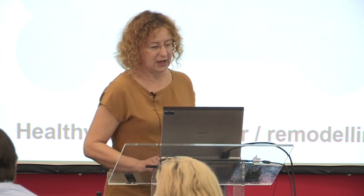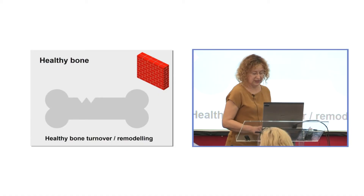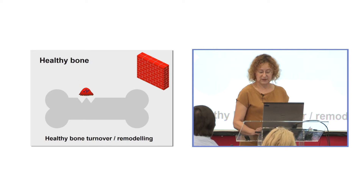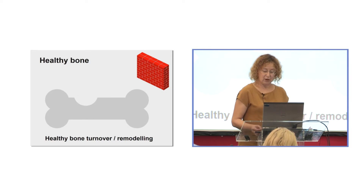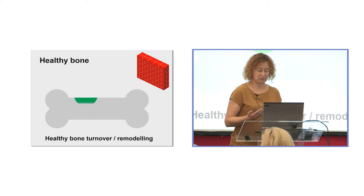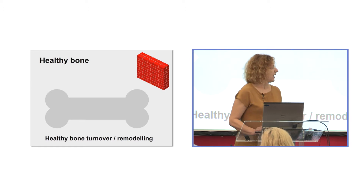Bone, like any other material, undergoes damage and wear and tear, and it has to be repaired. The osteoclasts arrive on the scene and dissolve bone through the action of very powerful compounds — chemicals such as hydrochloric acid and others. Then in their place, osteoblasts come along and in an orderly fashion lay bone. We call it lamellar bone — it's very fine, it gets mineralised, becomes strong, and the repair has been completed.